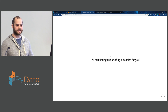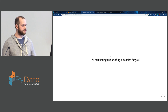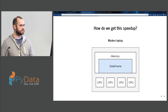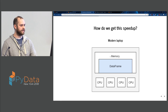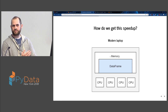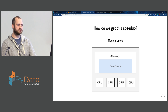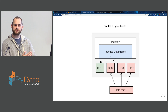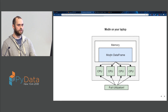How do we get this speedup? This is a modern laptop — four cores and a DataFrame that fits comfortably in memory. With Pandas, it's only using one of your CPUs, and you have a bunch of idle cores doing nothing. With Modin, we're actually using all the cores in the machine, so we get full utilization, and that helps you be more productive.